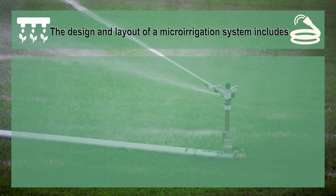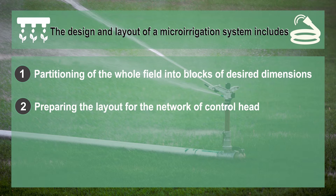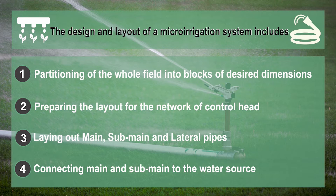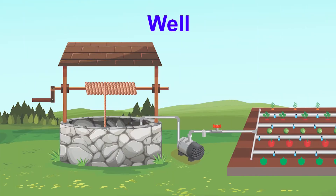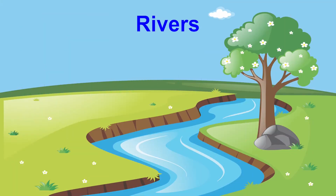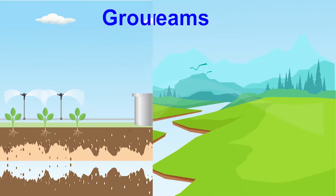The design and layout of a micro-irrigation system includes the partitioning of the whole field into blocks of desired dimensions and preparing the layout for the network of control head, main, sub-main and lateral pipes, connecting them to the water source. The various sources of irrigation include tank, well, canals, lakes, rivers, ponds, reservoirs, streams and groundwater.